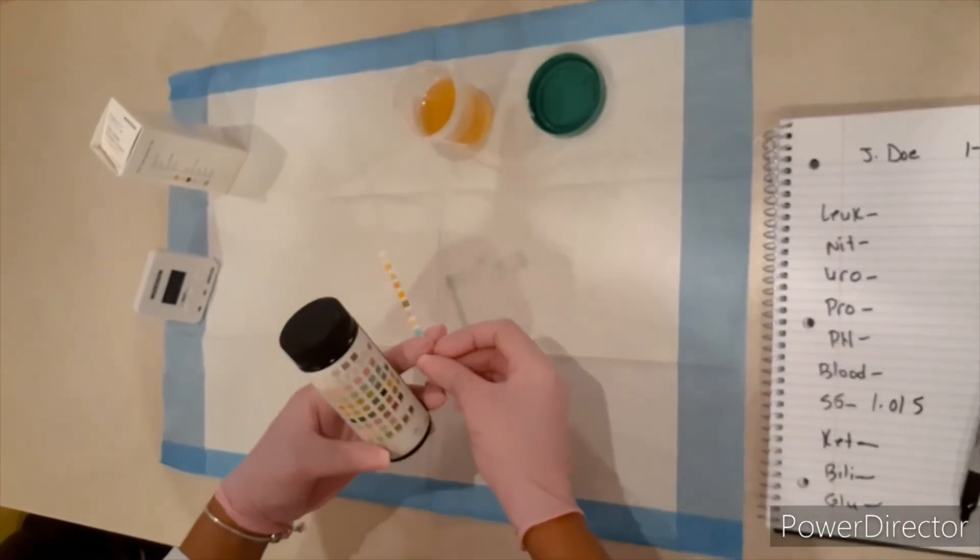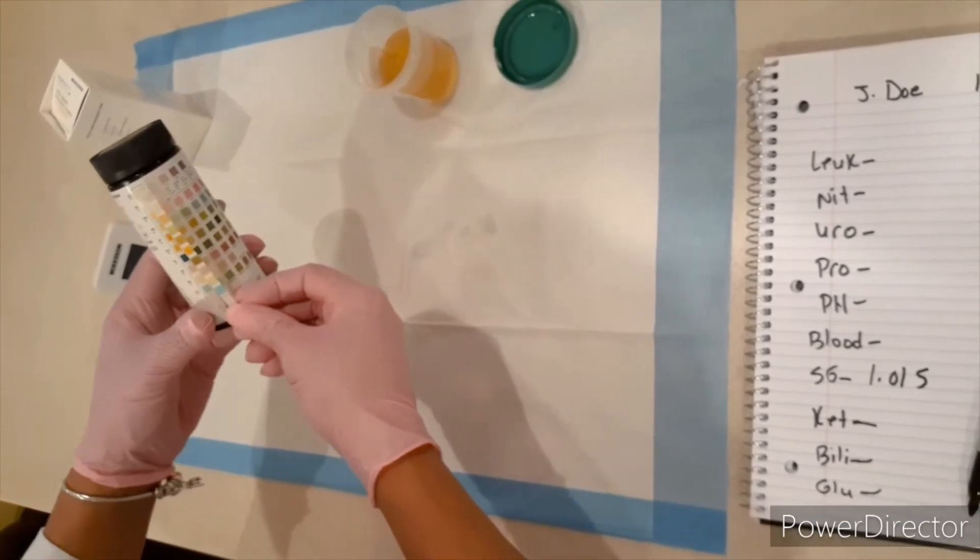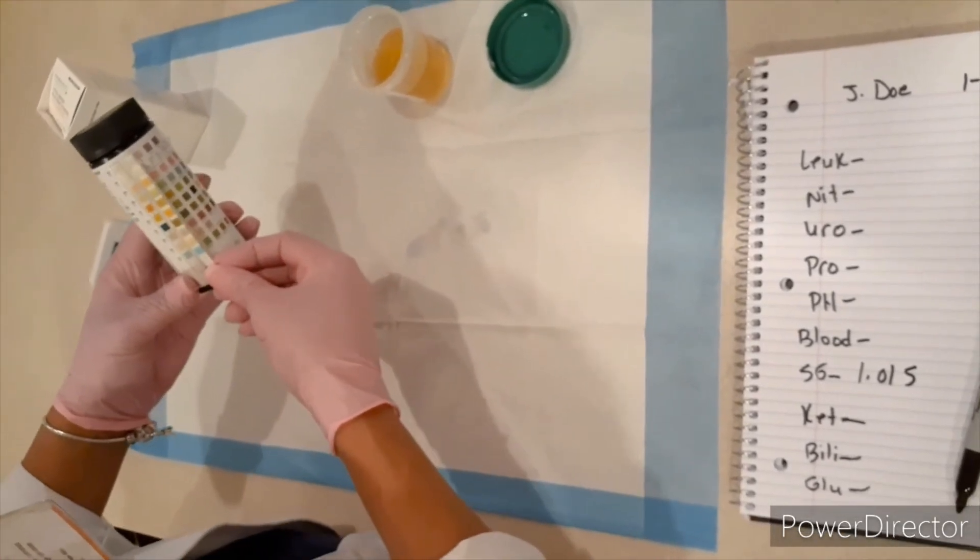At 60 seconds, I'm right at 59 seconds now. So 60 seconds, I'm going to go ahead and check the blood pH protein, urobilogen and nitrites.